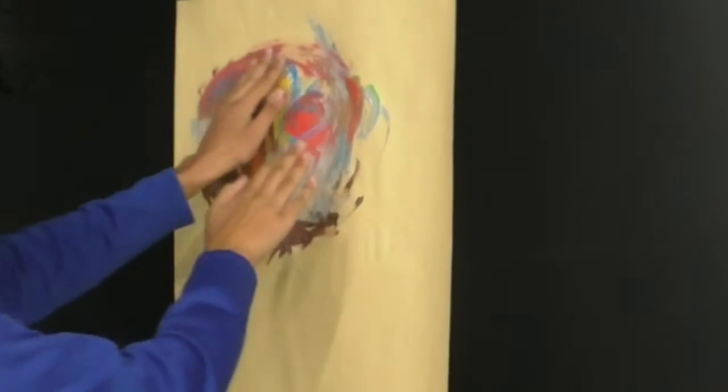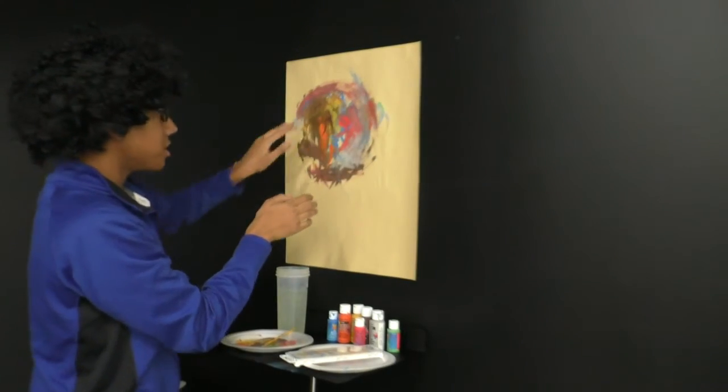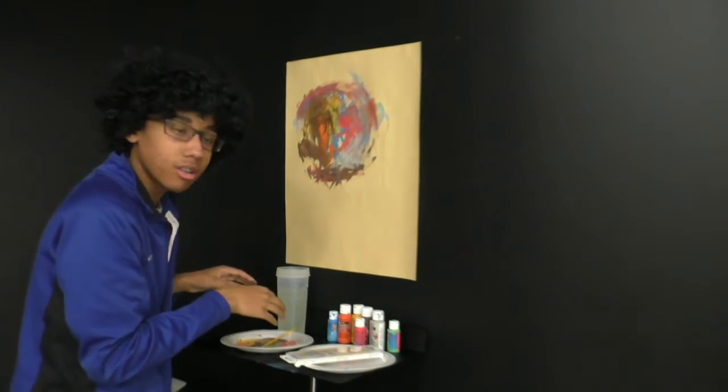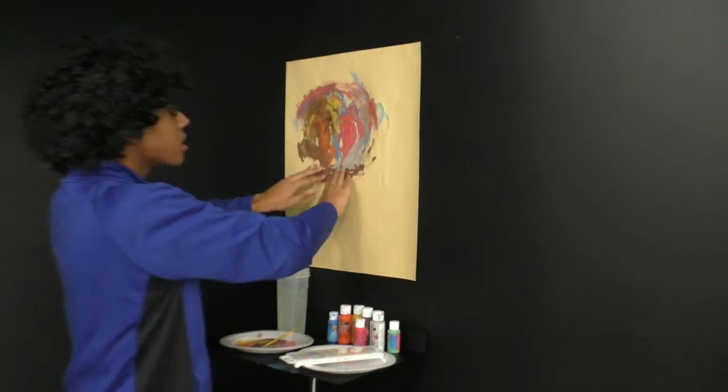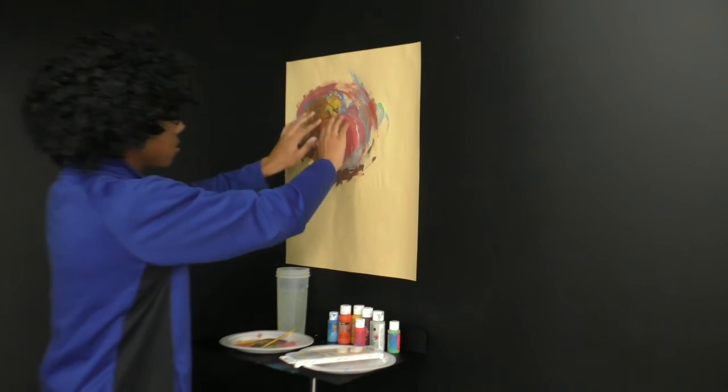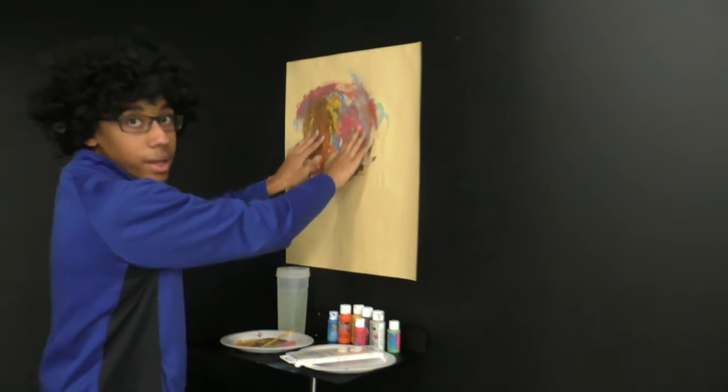Kind of like the drawing that Rafiki did in the Lion King, if any of you guys have seen that movie, when he drew Simba on that tree. A little bit like that. We're not using berries, we're using paints, washable paints.